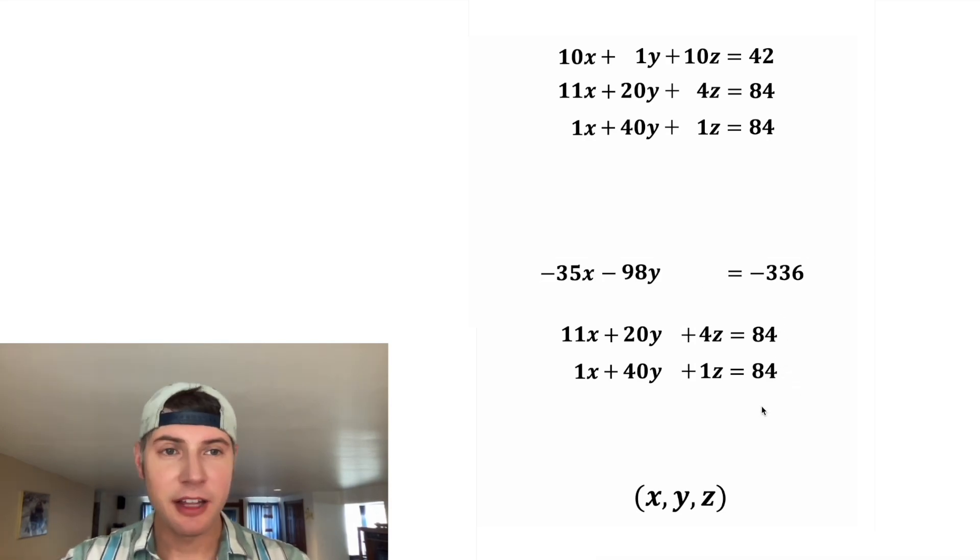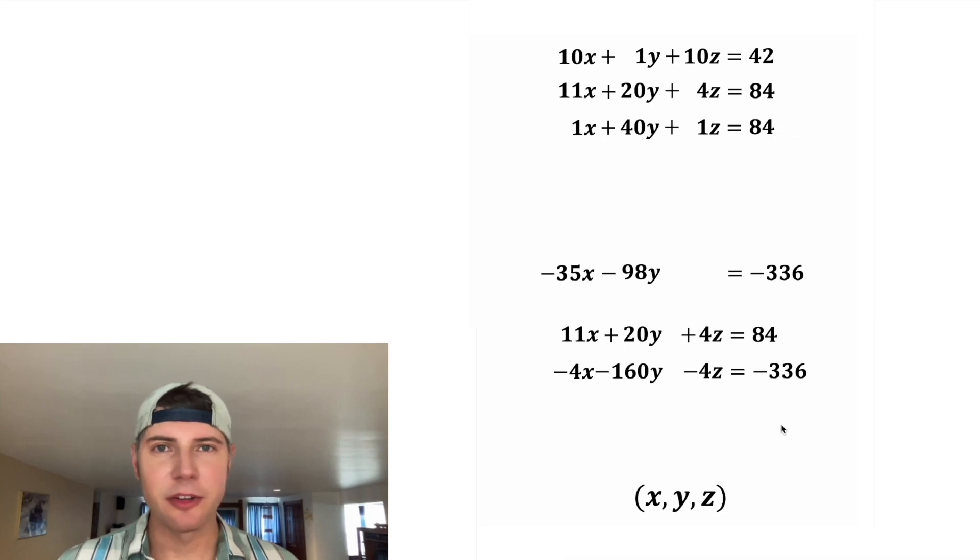Now let's do the same thing down here. In this case, all we have to do is multiply the bottom row by negative four. So the negative four times the one is negative four. Multiply by the 40 gives us negative 160, and multiply by the one is another negative four. And negative four times 84 is negative 336.